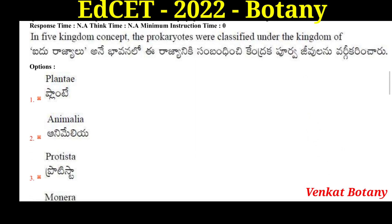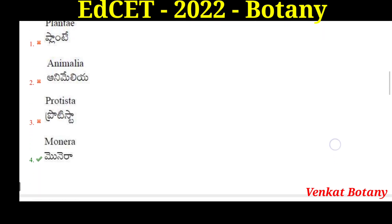In the five kingdom concept, the prokaryotes were classified under which kingdom? The five kingdom classification concept was proposed by R.H. Whittaker. In the five kingdom classification, the kingdoms are Monera, Protista, Fungi, Plantae, and Animalia. The prokaryotes belong to the kingdom Monera.